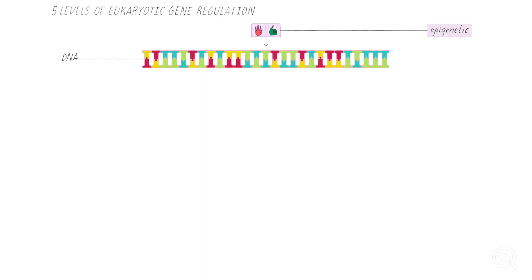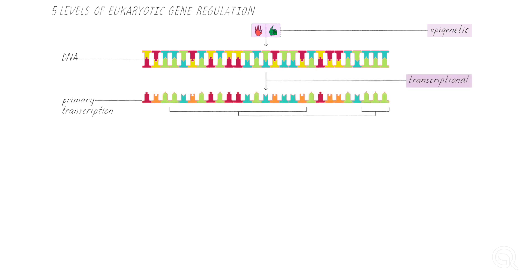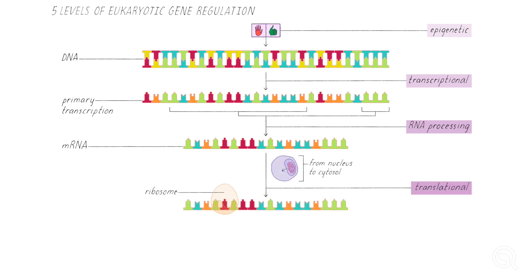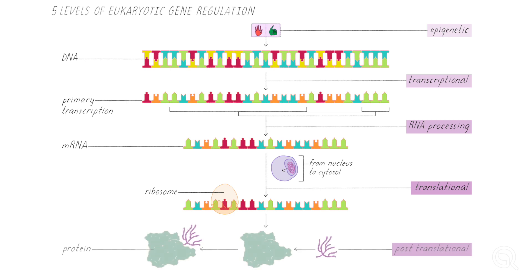In eukaryotic gene regulation, there are multiple levels at which a gene can be controlled. You have the epigenetic level, which is the higher level up on the DNA itself. Then there is transcriptional regulation — effects on the promoter, the enhancer, and the silencer. After that, post-transcriptional regulation involves how that messenger RNA is processed. You can also control gene expression at the translational level — how that protein is actually being made — and at the post-translational level, affecting the three-dimensional shape of that protein.